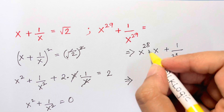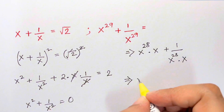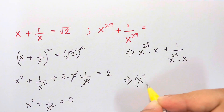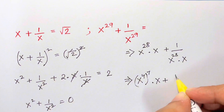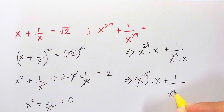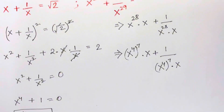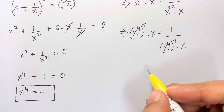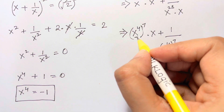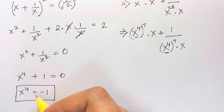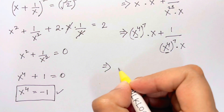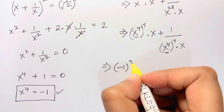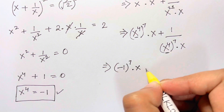Now x²⁸ can be written as (x⁴)⁷. So our expression becomes (x⁴)⁷ · x + 1/((x⁴)⁷ · x). Since x⁴ = -1, we substitute to get (-1)⁷ · x + 1/((-1)⁷ · x).